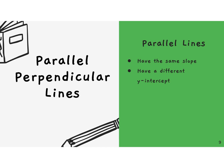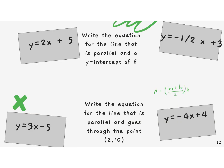Parallel lines. Parallel lines have the same slope but have a different y-intercept. We're going to start with the top two. Write an equation for the line that is parallel and has a y-intercept of 6. When writing parallel lines, you want to focus on two pieces: the slope and the y-intercept. All of our lines are going to have the same slope.